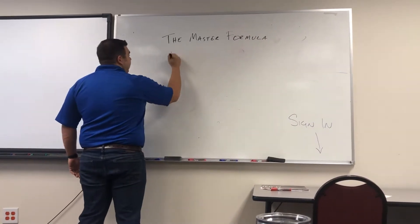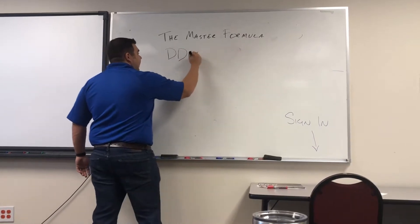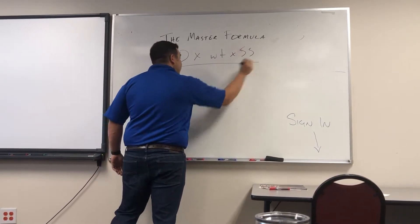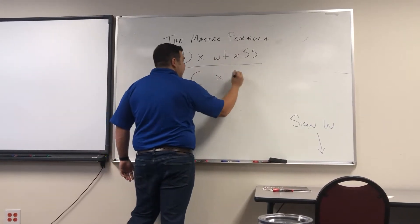It's called the master formula because you can use it for all of your drug math needs. The master formula is DD times WT times SS over C times T.